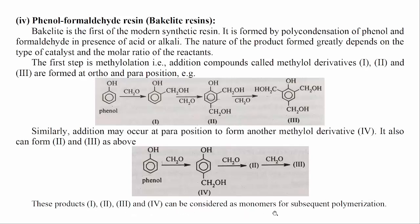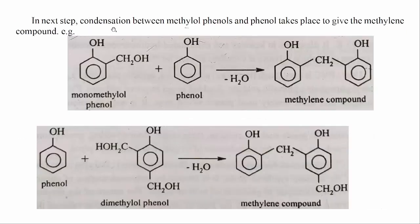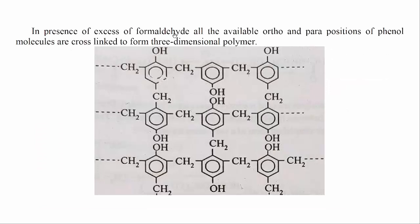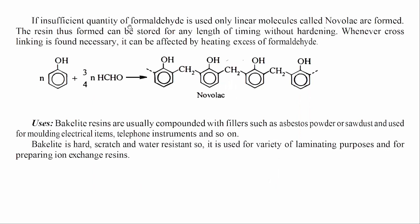These products can be considered as monomers for subsequent polymerization. In the next step, condensation between methylol phenols and phenol takes place to give the methylene compound. In the presence of excess formaldehyde, all the available ortho and para positions of phenol molecules are cross-linked to form a three-dimensional polymer. If insufficient quantity of formaldehyde is used, only linear molecules called novolac are formed. The resin thus formed can be stored for any length of time without hardening.